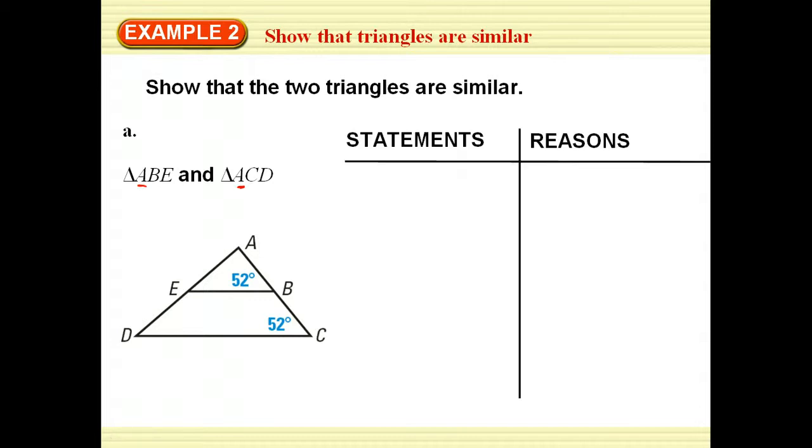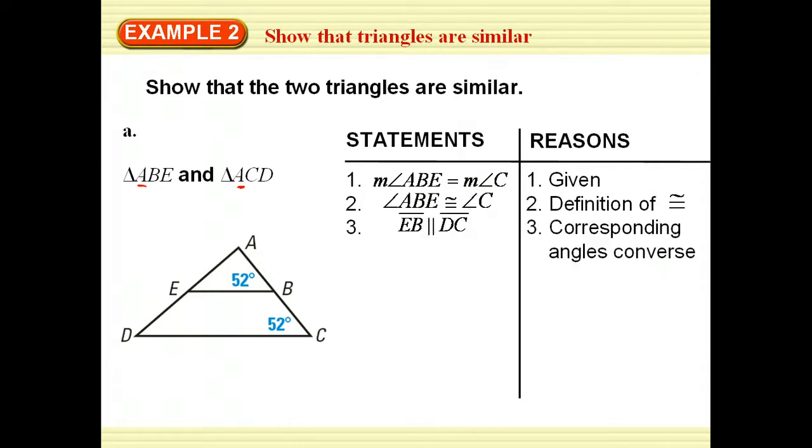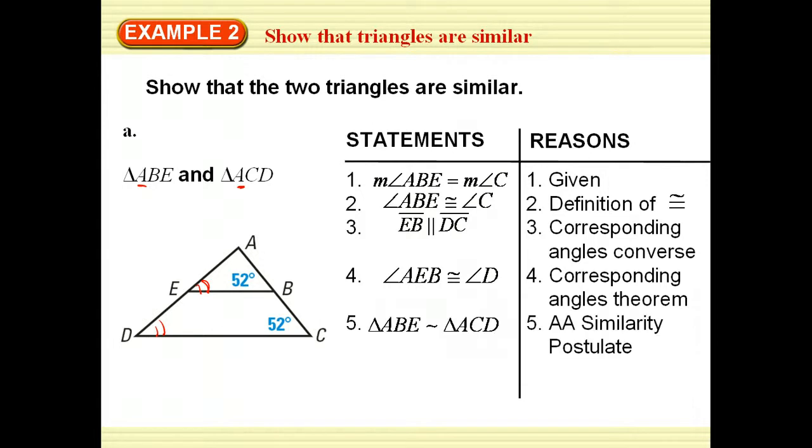If I'm going to actually write a two-column proof, I'll start out stating that angle ABE and angle C are both congruent. That's given, so we have congruent angles. These two lines are parallel by the corresponding angle converse. So AEB, this angle, is congruent to angle D because of corresponding angles theorem, so now we have the angle-angle postulate.